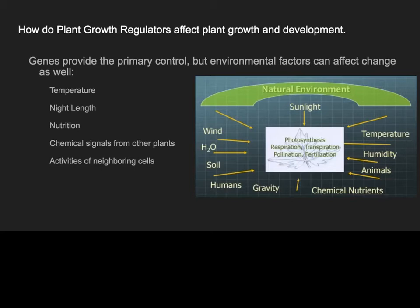Chemical signals from other plants are a big factor too. A great example is if you look underneath a pine tree — pine needles are extremely acidic, so when they drop they create a very acidic environment in the soil. You rarely see plants grow underneath pine trees; you probably won't even see grass grow there. Some plants are resistant to that and can be seen proliferating underneath the pine tree. Activities of neighboring cells also matter — if one cell starts to grow through photosynthesis, that might cause other cells to do the same.